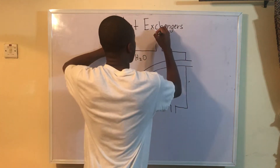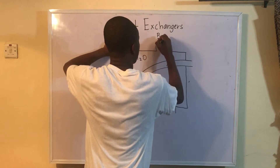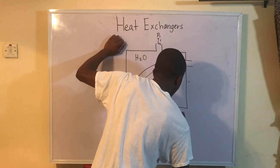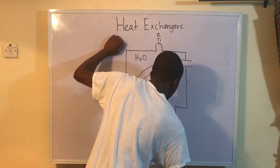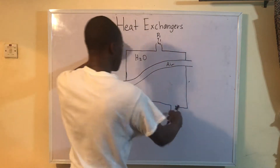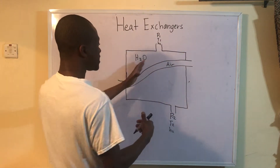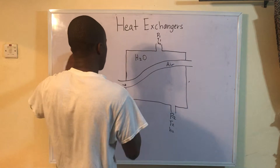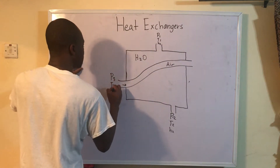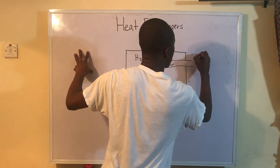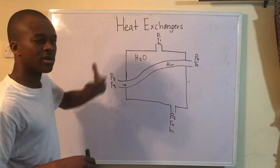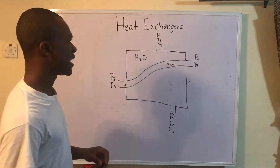Because we're dealing with water, you might be given P1, T1, H1. And because we're dealing with air, you might be given P2, T2, H2 — those are both for water actually. This is a boundary separating the air from the water, and this might be P3, T3 and P4, T4. The odd numbers are the inlets and the even numbers are the outlets.